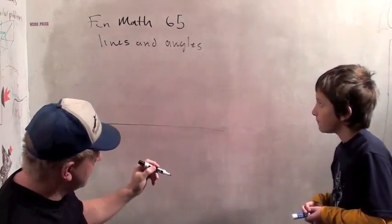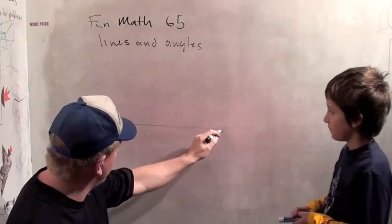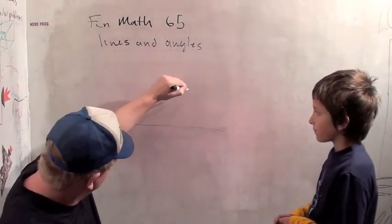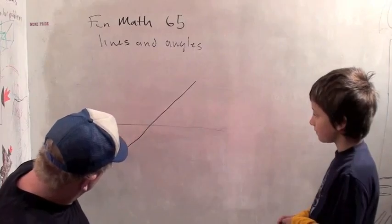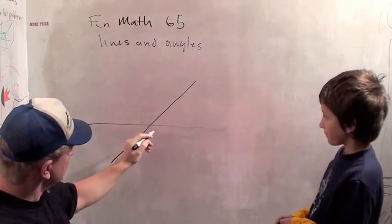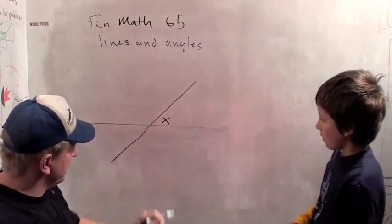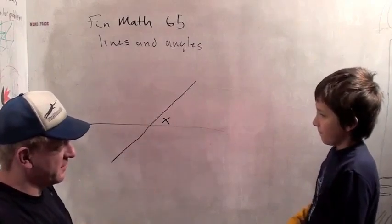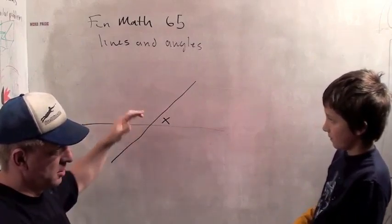We're going to learn about lines and angles. So I've drawn a line here, and I'm going to draw another line that comes like this. And it makes an angle x here. And these are both straight lines, even though on the board they're a little wiggly.